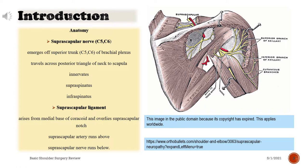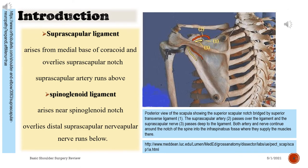The suprascapular ligament arises from the medial base of the coracoid and overlays the suprascapular notch. The suprascapular artery runs above the ligament, while the suprascapular nerve runs below it. The spinoglenoid ligament arises near the spinoglenoid notch and overlies the distal suprascapular nerve, which runs below it.